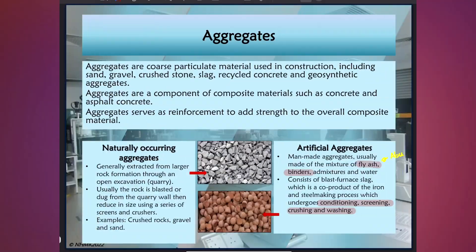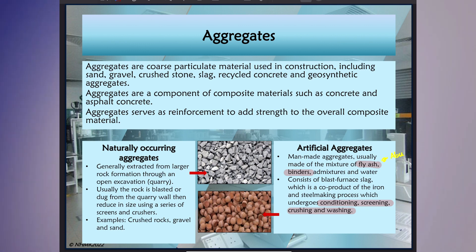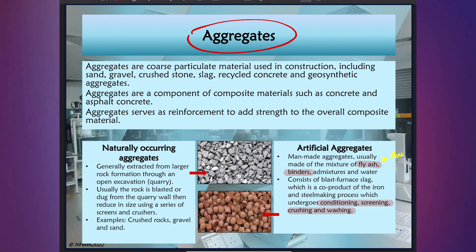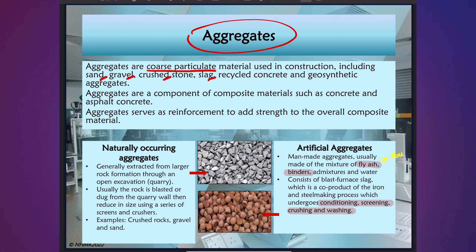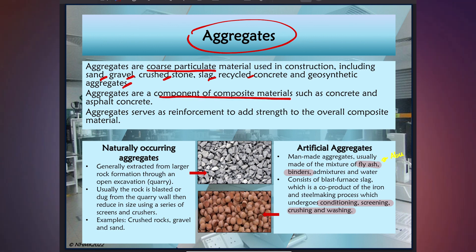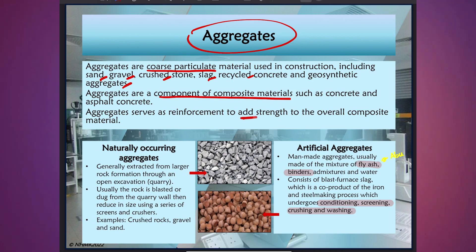Now let us look at the first material — aggregates, also commonly called crusher run, which is the main material of both flexible and rigid pavements. Aggregates are the coarse particulate material used in construction, which include sand, gravel, crushed stone, slag, recycled concrete and geosynthetic aggregates. Aggregates are a component of composite materials such as concrete and asphalt concrete, and they serve as reinforcement to add strength to the overall composite material.